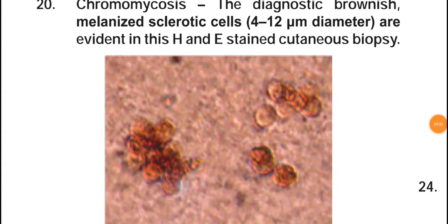In this picture you are seeing brown globose bodies, which are nothing but sclerotic bodies. The other name for these is Medlar bodies, and they have a copper penny appearance, also called a muriform cell appearance.